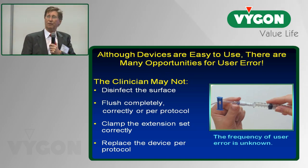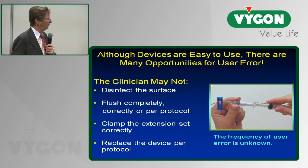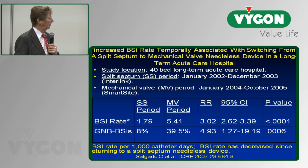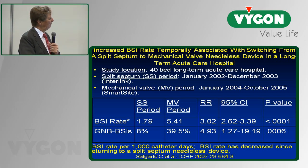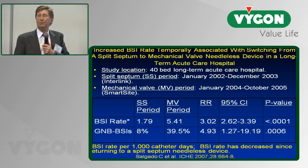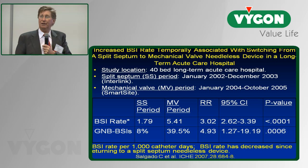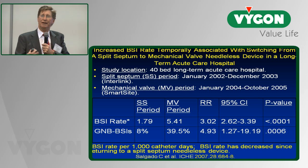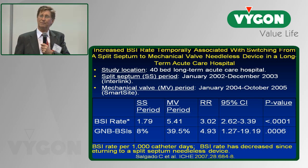We've seen outbreaks associated with a wide variety of connectors. One of the first was by Cassie Salgado at the University of South Carolina in a long-term acute care hospital. They were using a split septum and changed to a mechanical valve needleless connector. Their bloodstream infection rate went from about 1.8 to 5.4—literally a tripling—and this was highly statistically significant. They saw a five-fold increase in gram-negative bloodstream infections from about 8% to 40%. Education could not bring the rate down, and they finally had to go back to a split septum needleless connector.